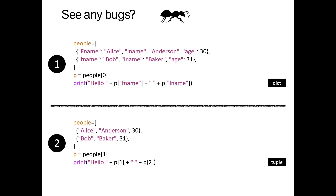Here are two pieces of code that will both print out 'Hello Alice Anderson' and 'Hello Bob Baker.' The first version uses a dictionary inside the list for all data; the second uses a tuple inside the list. Both of these pieces of code have a bug that will prevent them from doing what we want. Pause the video and see if you can spot the bugs. The Jupyter notebook note-taking guide has a little box to let you put down your prediction.